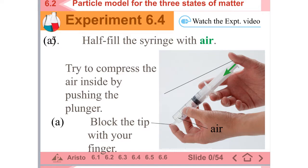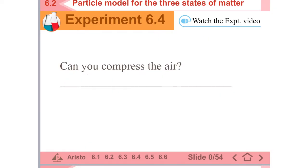And this time you are going to half fill the syringe with air, and then try to compress the air inside by pushing the plunger. And once again, block the tip with your finger. When you do the same for the syringe, you can see that the position of the plunger can go inside. This little change tells you that you can compress the air.